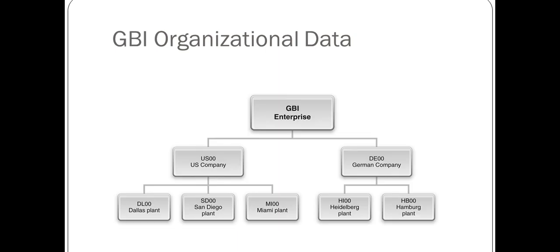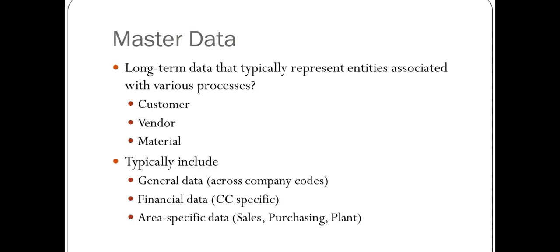GBI — Global Bike Incorporated — is the company you will be working with in your hands-on SAP assignments starting from Week 2. The GBI enterprise has company code one within the US and another in Germany, each with its own plant. Company codes are categorized by geographical area — within the US is one company code, while Germany, France, Mexico, etc. each have different company codes.